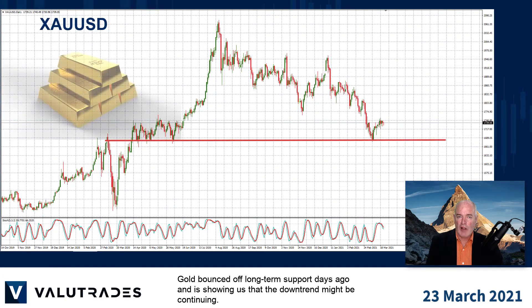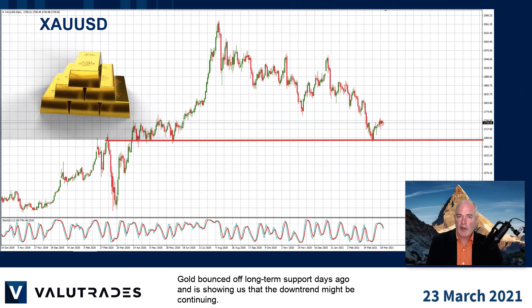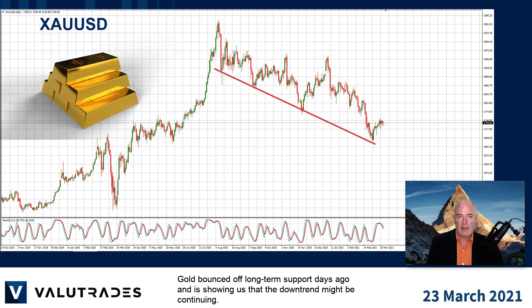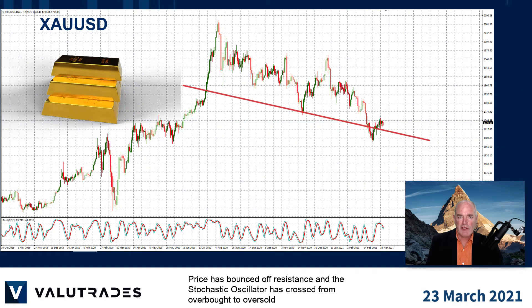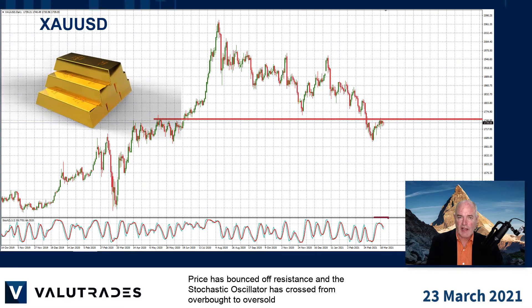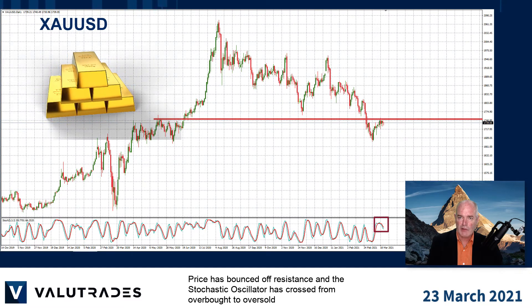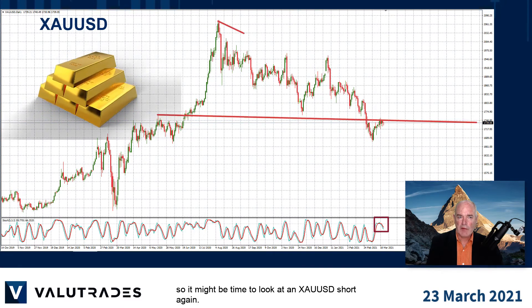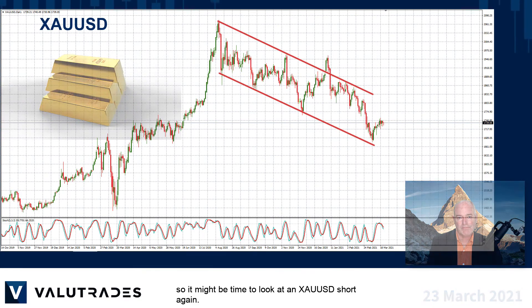Gold bounced off long-term support days ago and is showing us that the downtrend might be continuing. Prices bounced off resistance and the stochastic oscillator has crossed from overbought to oversold, so it might be time to look at an XAUUSD short again.